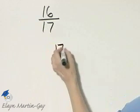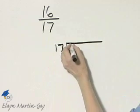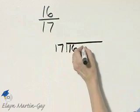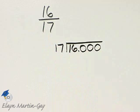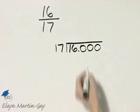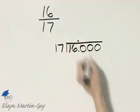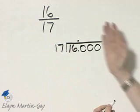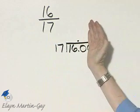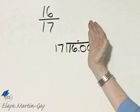So I'll divide 17 into 16. Let's go ahead and put a decimal point and some zeros. I'll insert more zeros if needed. And here's the decimal point then in the quotient. So 17 will not divide into 16, but it will divide into 160.